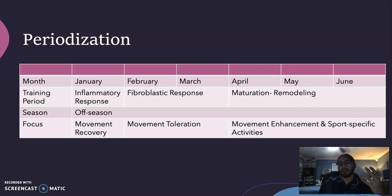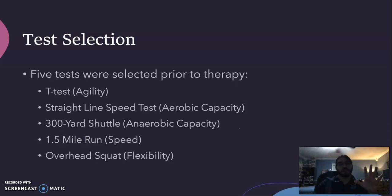For the third phase, the maturation remodeling phase, we focused on movement enhancement and sport-specific activities. This is the toughest of the three phases. For test selection, five tests were selected prior to therapy: the T-test measuring agility, the straight-line speed test measuring speed.